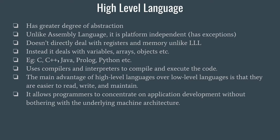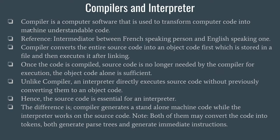Examples of high-level languages are C, C++, Java, Python, and Prolog — Prolog is used for artificial intelligence. High-level languages use compilers and interpreters to compile and execute code. The main advantage of high-level language over low-level language is that HLLs are easier to read, write, and maintain, whereas it is very difficult to write code in assembly language. This means a developer can concentrate more on application development rather than worrying about the underlying architecture of the computer.